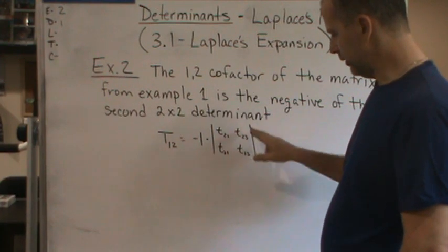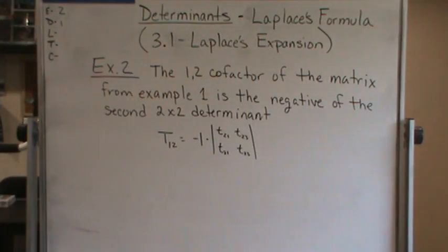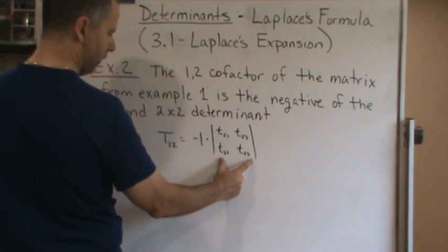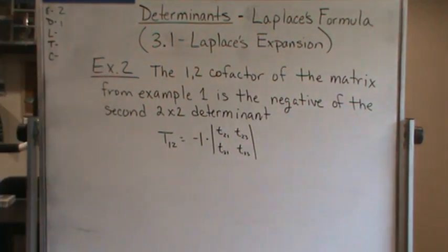This 2 by 2 matrix is the IJ minor, and then this whole thing is T1,2, which is the T1,2 cofactor. All right, that's it.